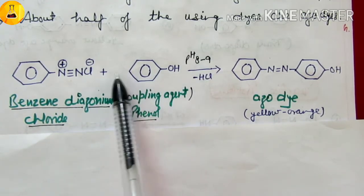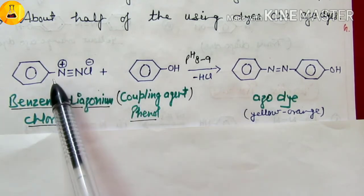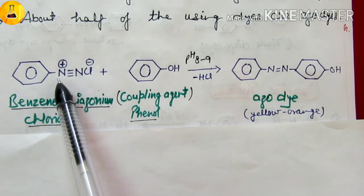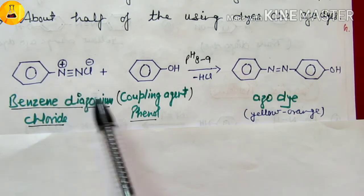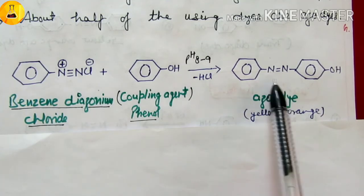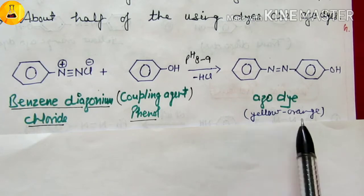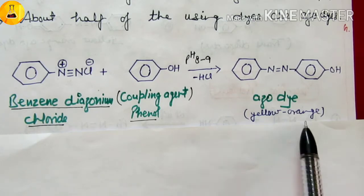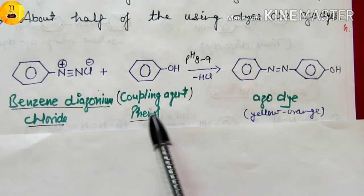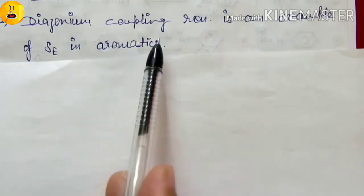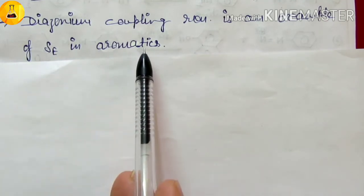Phenol reacts at the para position primarily. We have two nitrogen compounds in the product — azo means nitrogen. These dyes are yellow-orange in color. Diazo coupling reaction is an example of electrophilic aromatic substitution.